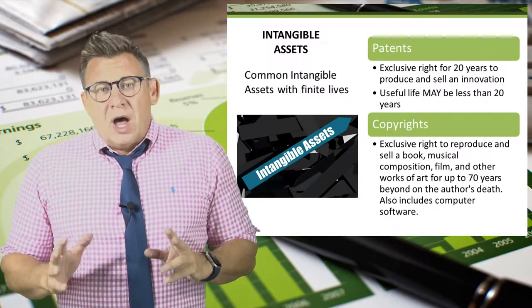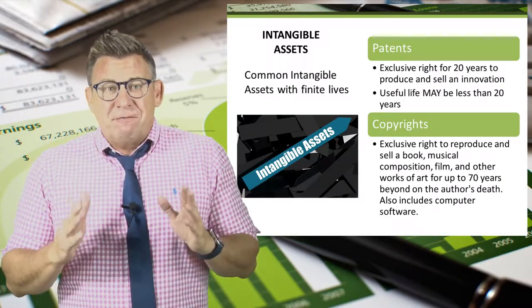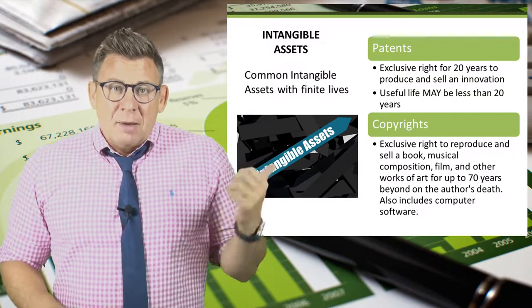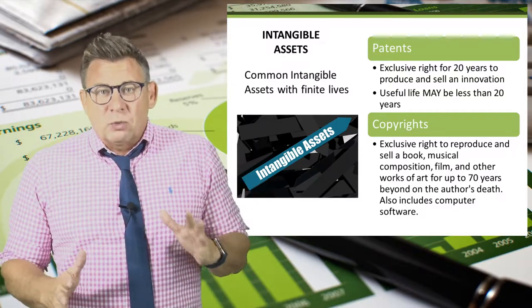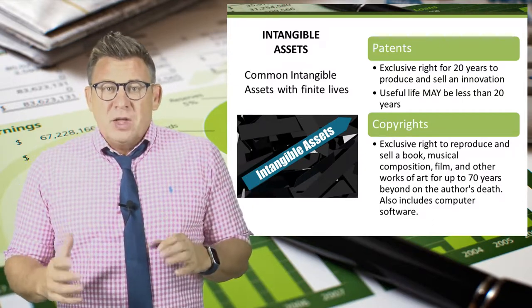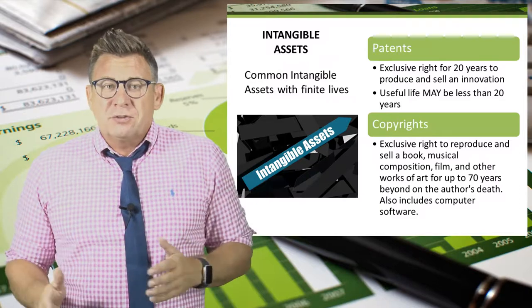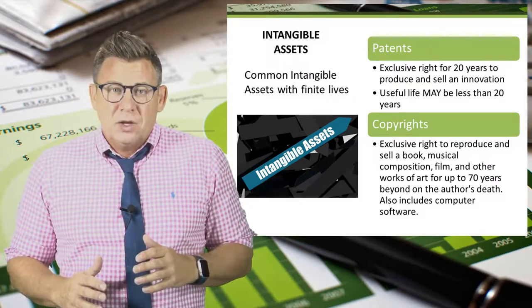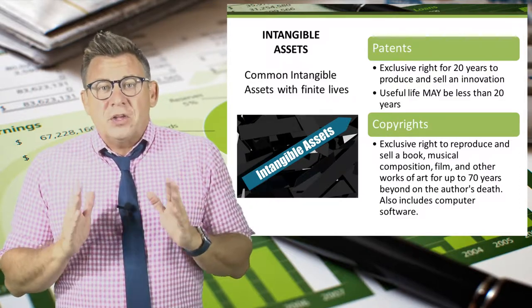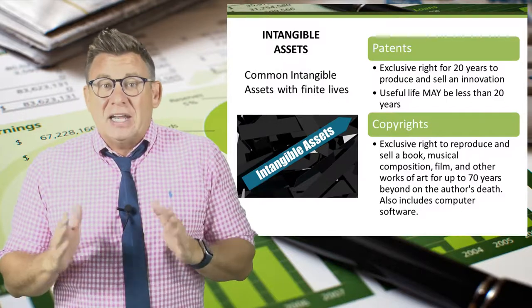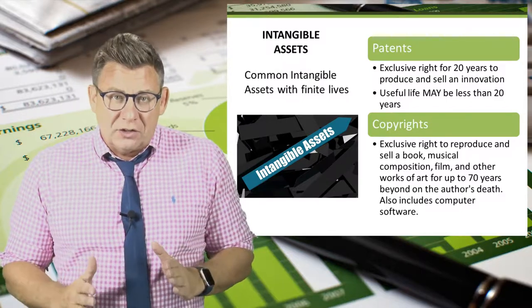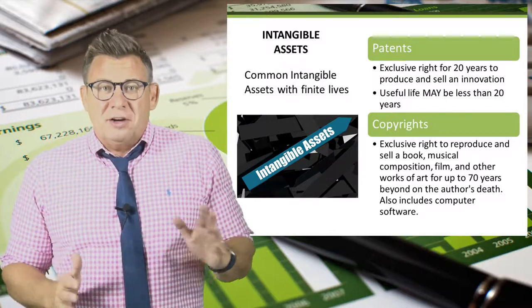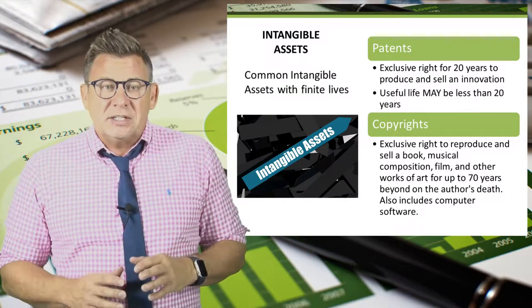Two common types of intangible assets with finite lives are patents and copyrights. Patents are legal rights granted by the federal government that grant exclusive rights for 20 years to produce or sell an innovation. Note that the useful life of a patent is often less than 20 years as technology changes render innovations outdated or obsolete.